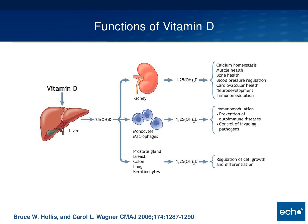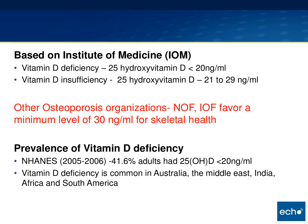Apart from the role of 1,25-dihydroxy vitamin D in muscle and bone health, it has pleiotropic effects on nearly 200 genes in the body, helping regulate blood pressure, cardiovascular health, and neurodevelopment. It's thought to work on monocytes and macrophages and have an immunomodulatory effect, preventing autoimmune diseases and controlling invading pathogens. It's also thought to have a role in regulation of cell growth and differentiation in a number of tissues in the body.